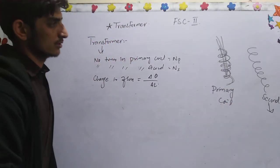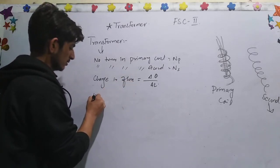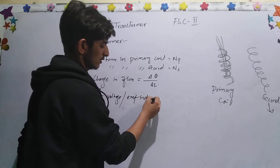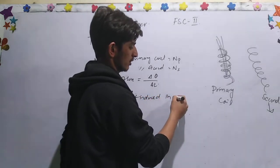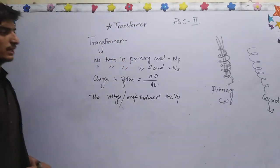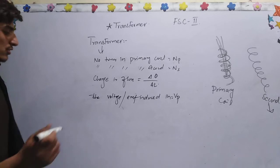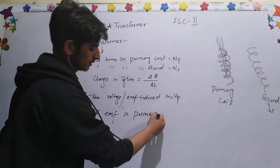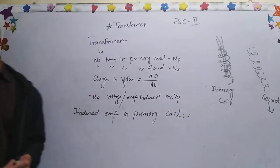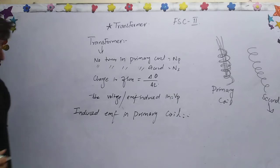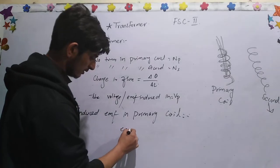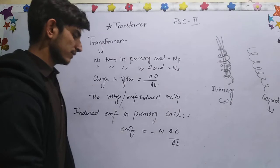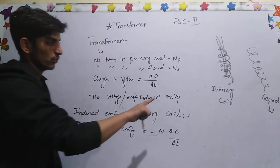The change in flux equals delta-phi over delta-t. When alternating current passes through the primary coil, there will be a change in EMF. The voltage or EMF induced in the primary coil gives us a relation: induced EMF equals minus N times delta-phi over delta-t. Here the minus sign shows that when the flux changes, the induced EMF opposes the change.